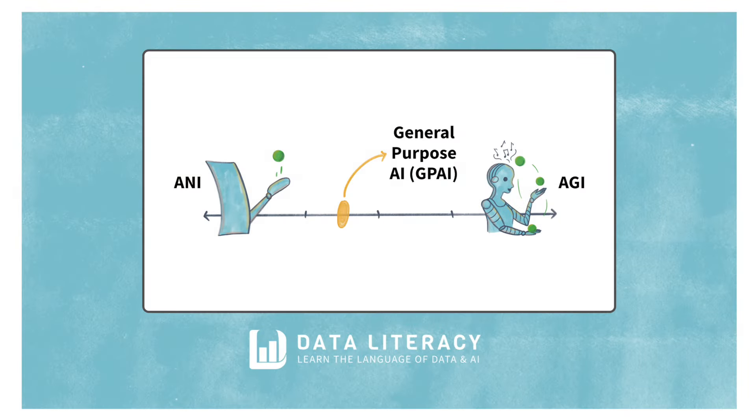GPAI refers to AI models that can perform a broad range of tasks using large datasets they've been trained upon. Think of technologies like OpenAI's GPT and DALL-E, Anthropic's Claude, and Meta's Llama. All of these new LLMs are able to generate human-like text, images, audio, and even video sometimes, across various contexts — but they're not fully capable of performing any intellectual task that a human can. So we can place GPAI somewhere in between ANI and AGI, because the foundational AI models released since 2022 are a major step up in capabilities from what we've historically called ANI.